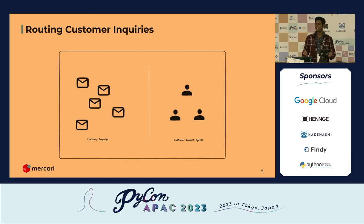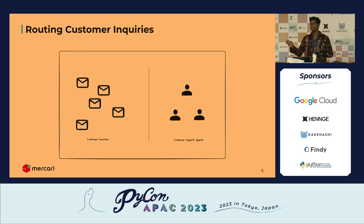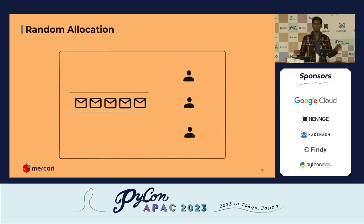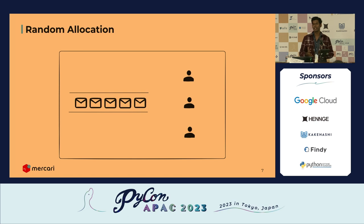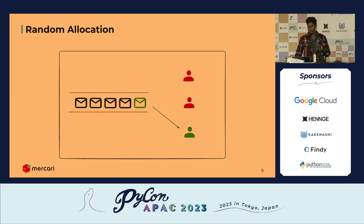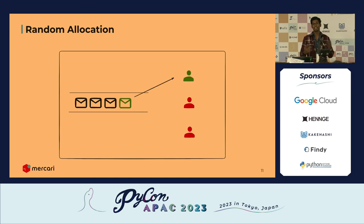Mercury is a C2C marketplace platform, so sooner or later users are going to face some problems. When they face problems, they send inquiries, and to reply to those inquiries we have CS agents. So how do we decide which inquiry will be answered by which agent? We need some kind of algorithm. The simplest way is random allocation: whenever an agent is available, we take the first inquiry at the top of the queue and assign it to whoever is available.